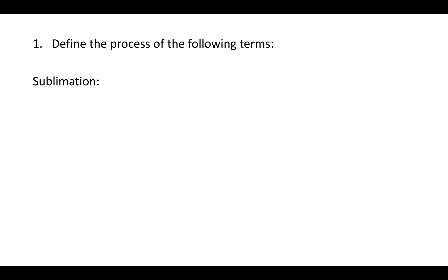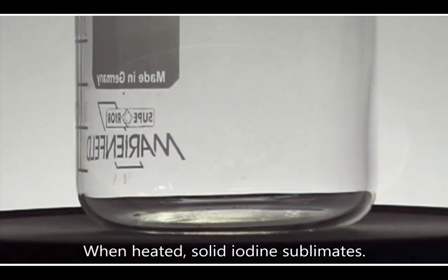So first, sublimation. Sublimation is when you go from a solid directly to a gas. So usually we think of solids as melting into liquids and liquids as boiling into gases, but some things go directly from a solid to a gas. Iodine is one example of that.